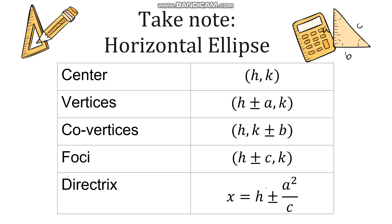We have to take note of the following if we want to identify the parts of the ellipse using the equation. For the center we have (h, k). For the vertices we have (h ± a, k). For the co-vertices it's (h, k ± b). For the foci it's (h ± c, k). And for the directrix, x = h ± a² / c. These are the formulas to identify the parts of a horizontal ellipse.